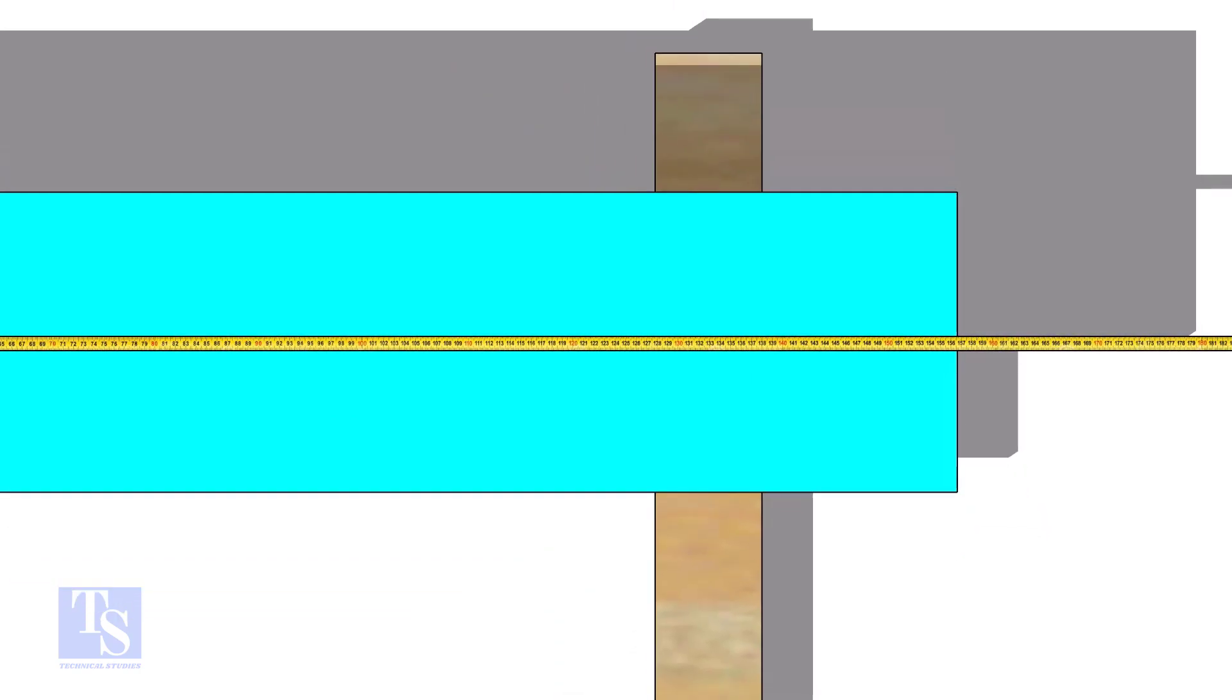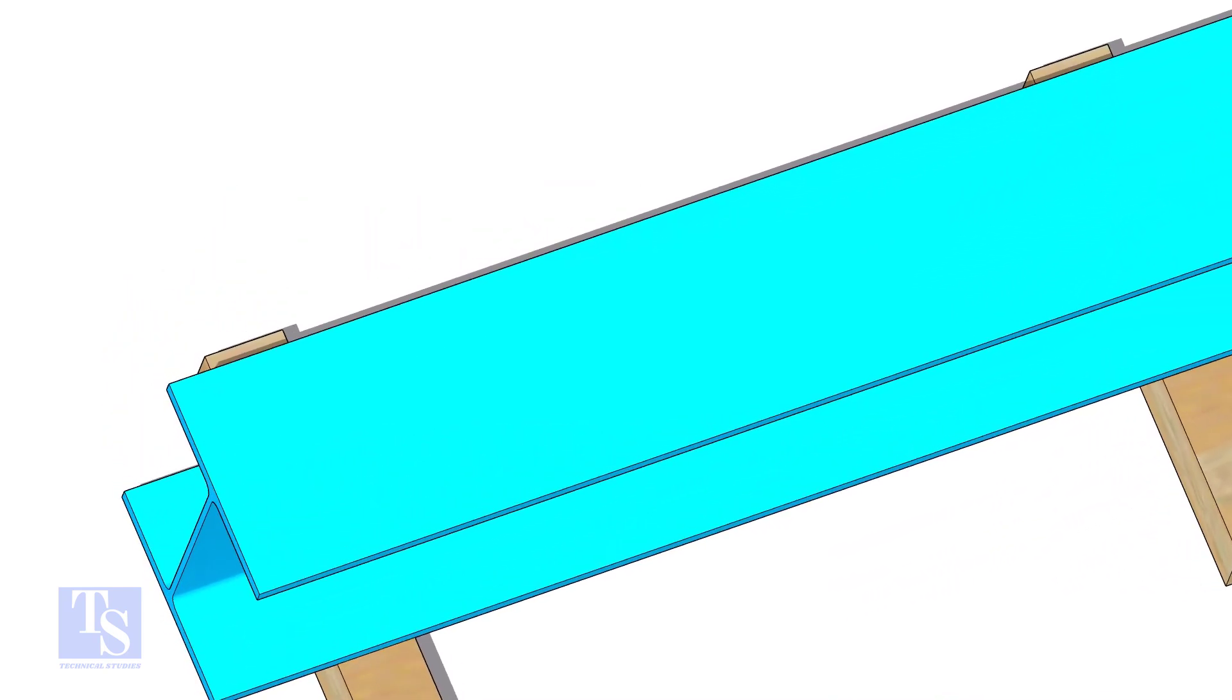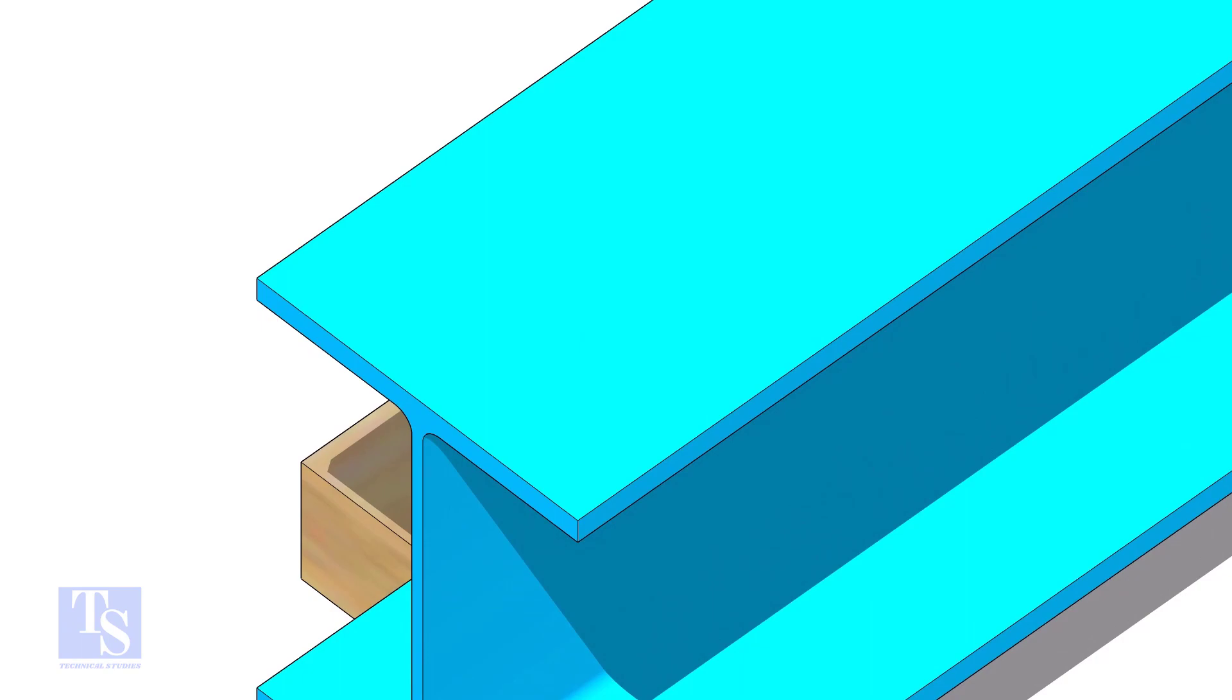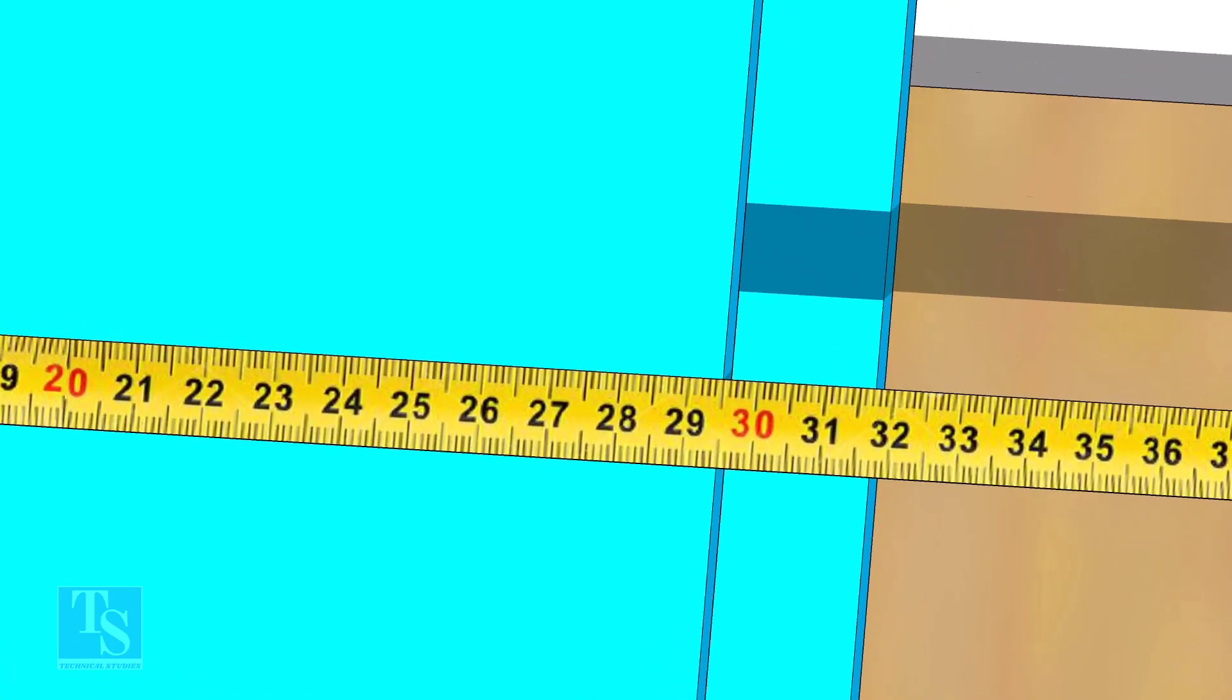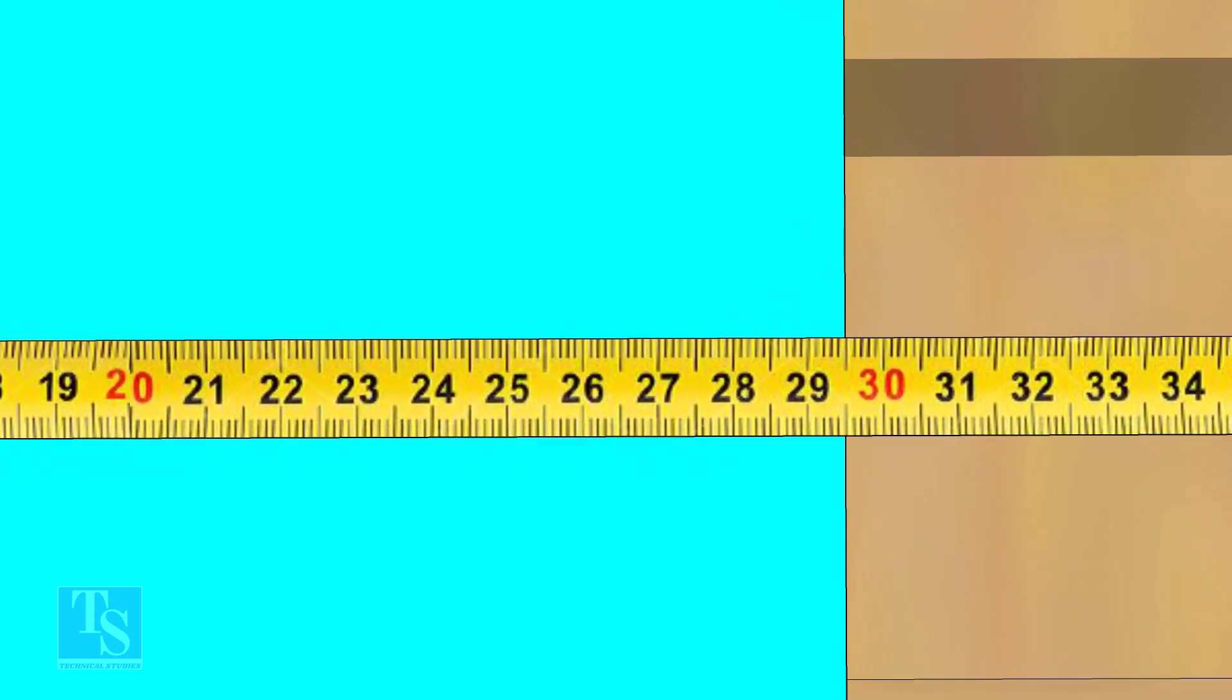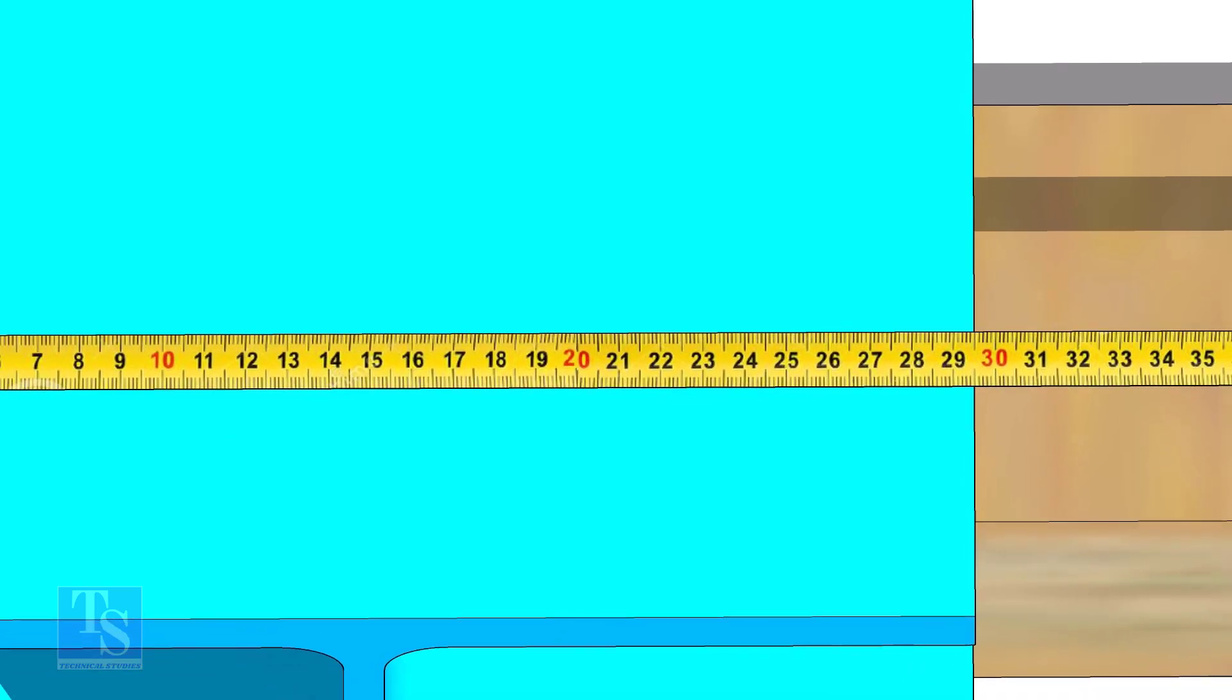Let us check the width of the beam. How much is this? The width is 5 millimeters less than 300, which equals 295 millimeters.